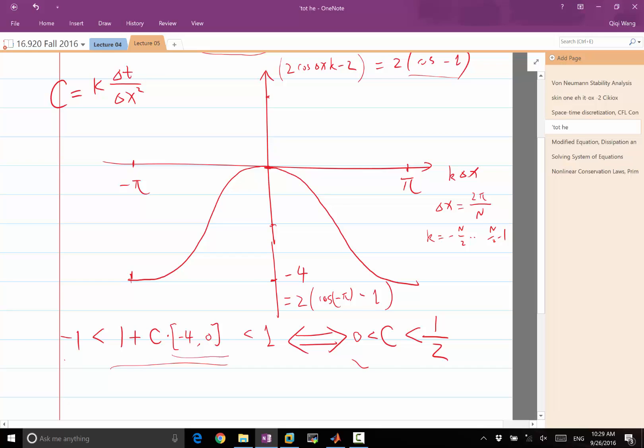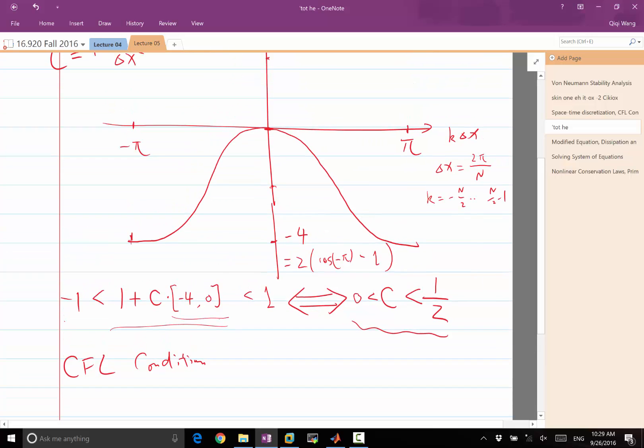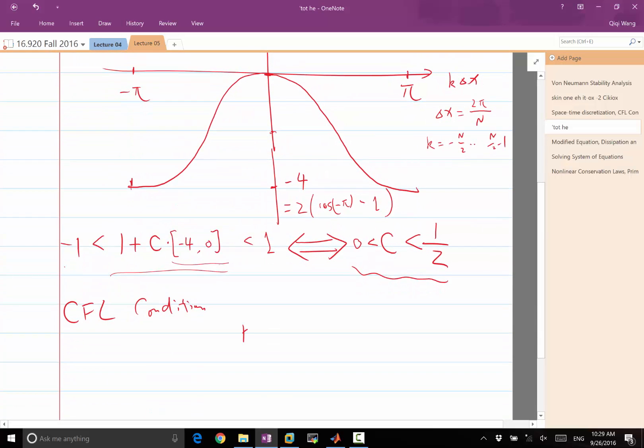So this is called the CFL condition. The C and F and L is just the first letter in the last name of three people who almost simultaneously discovered this law. The CFL condition is kappa times delta t over delta x squared has to be less than half.